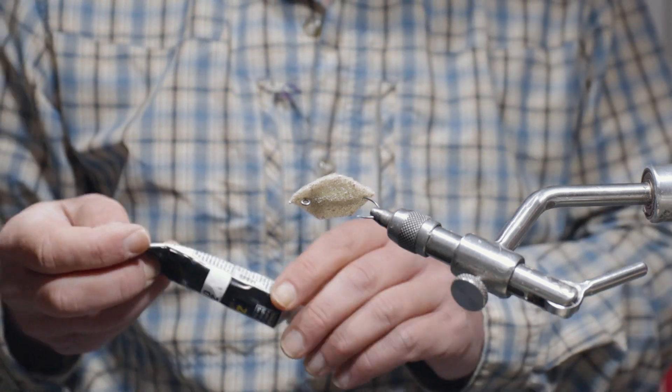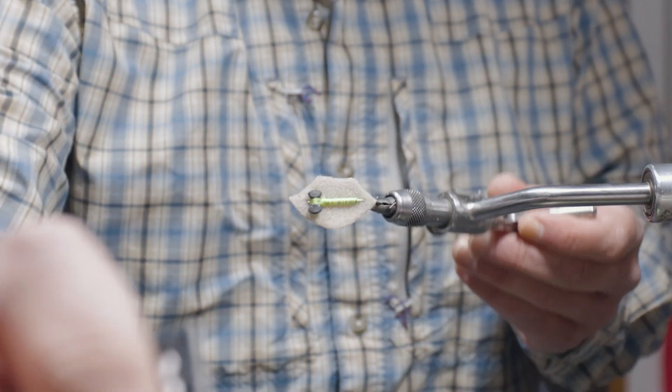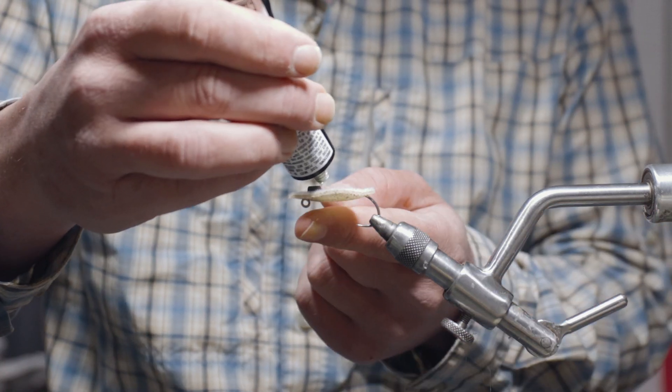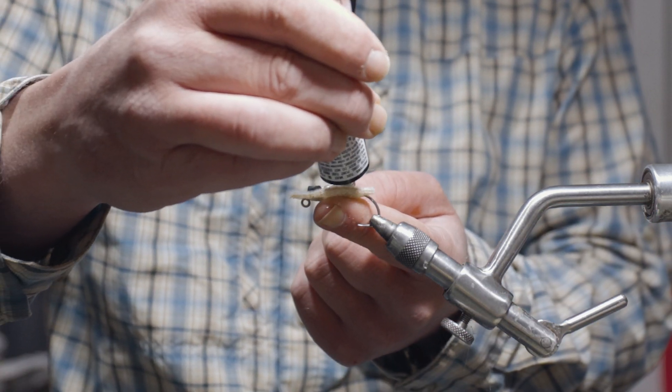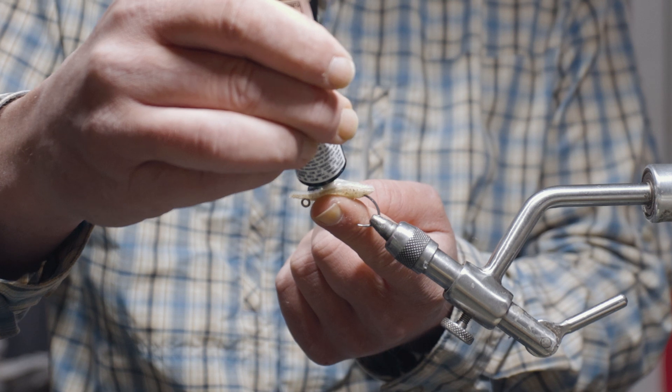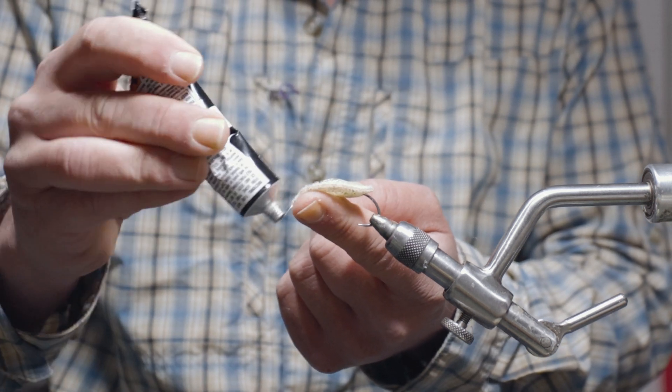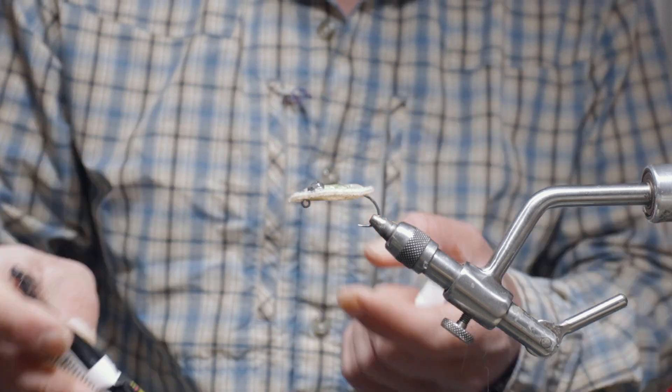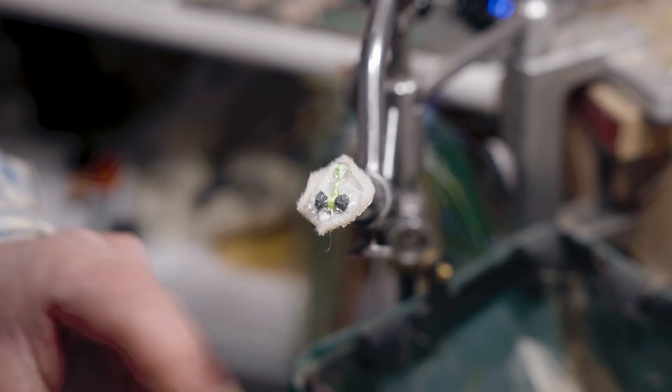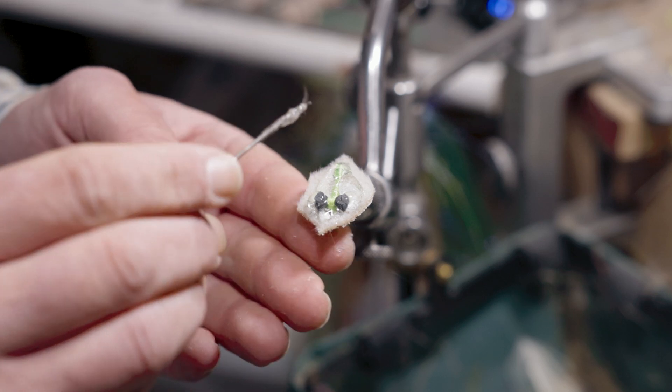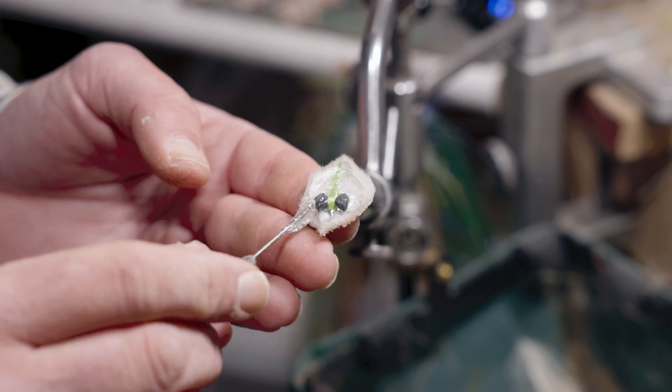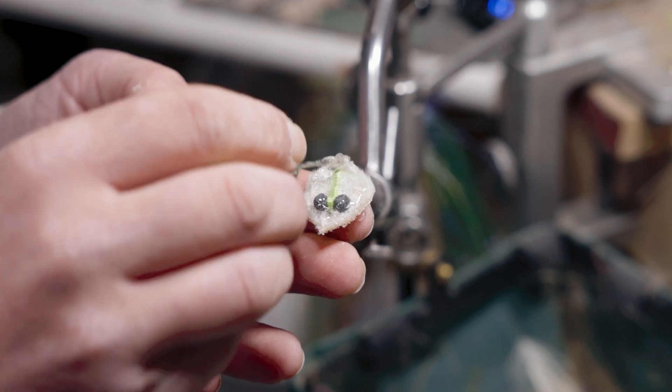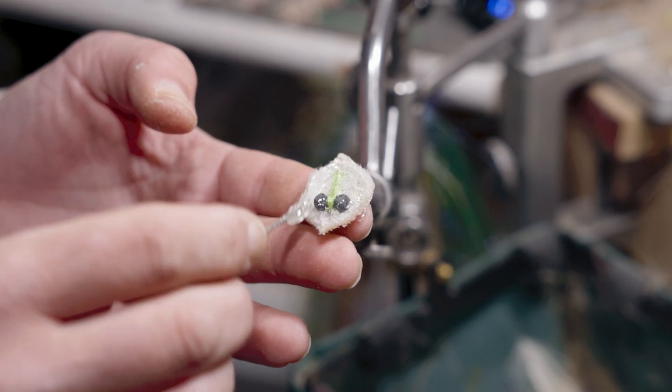From here we're going to take some Zap Goo. When this stuff dries it's going to be rigid but flexible, kind of a stiff rubbery glue. And I'm going to take our bodkin and just kind of spread that glue everywhere.